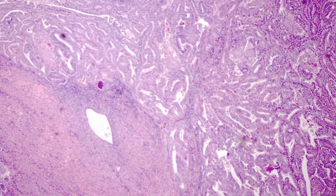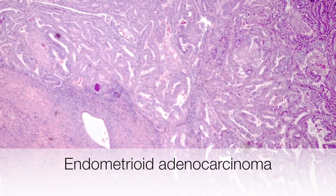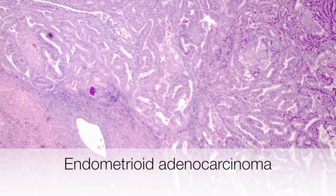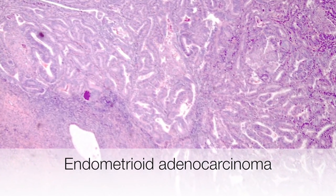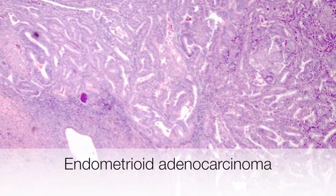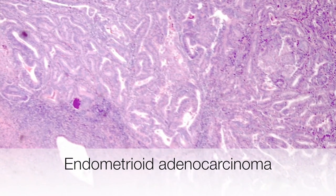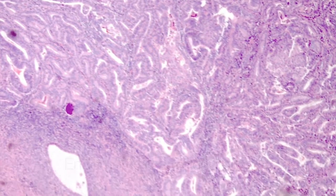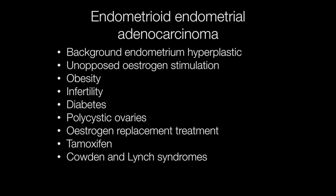This is the histological appearance of an endometrioid endometrial adenocarcinoma, clearly resembling endometrium. Endometrioid endometrial adenocarcinomas arise on a background of endometrial hyperplasia, and this is caused by unopposed oestrogen stimulation.